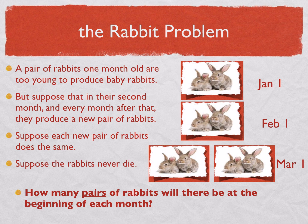The answer to this problem will be a sequence of numbers which actually has significance in nature — these numbers can be seen in nature. It's called the Fibonacci sequence, and it came about from this rabbit problem. So have fun solving it.